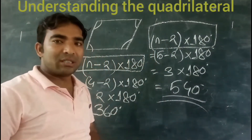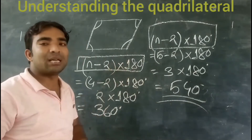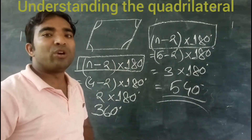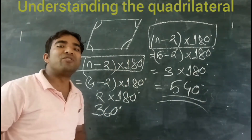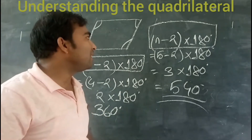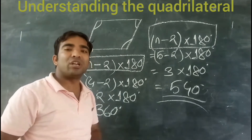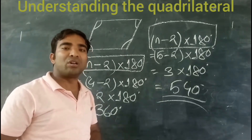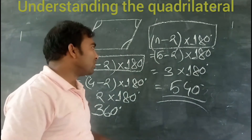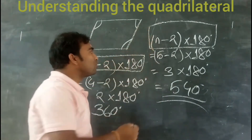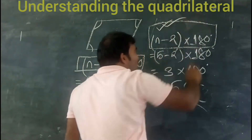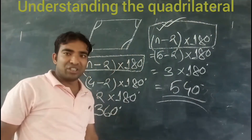By this method, we can find out the sum of the interior angles of a hexagon, heptagon, octagon, nonagon, or decagon. It is very easy — we just have to remember the formula, that is (n − 2) × 180 degrees.